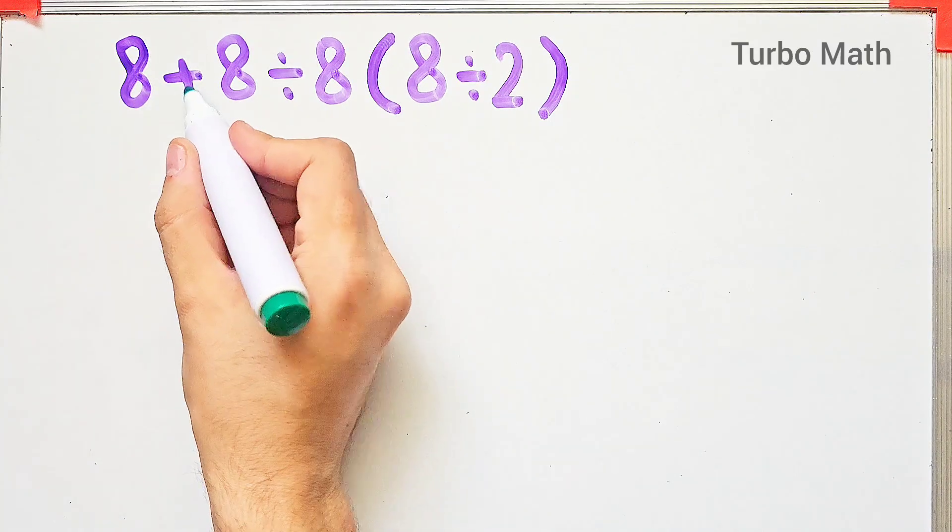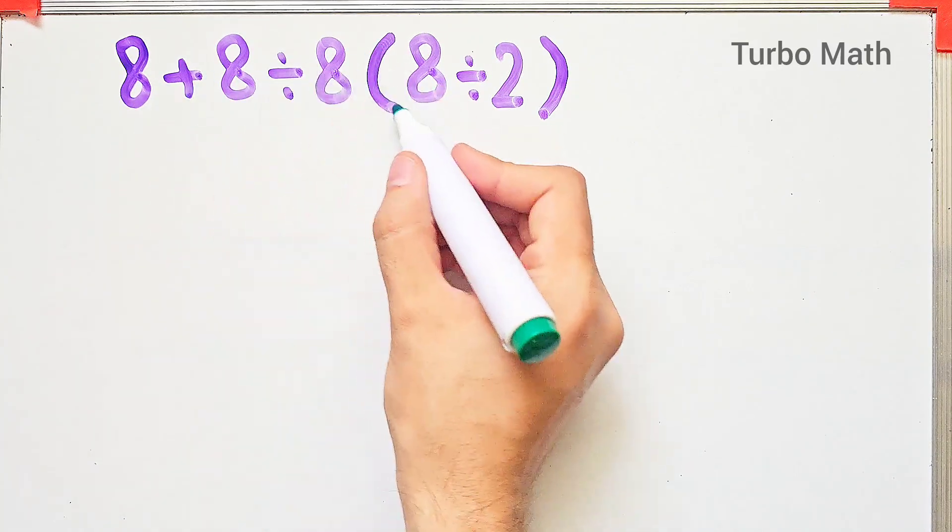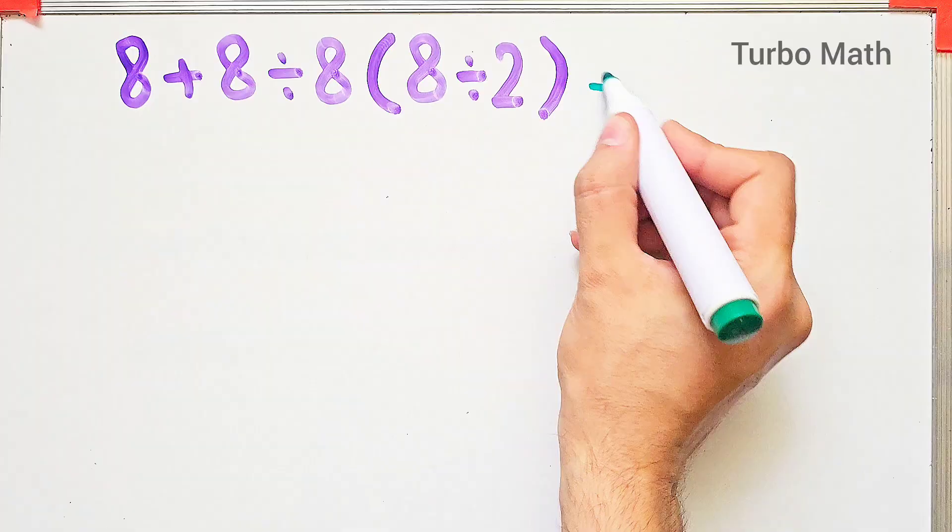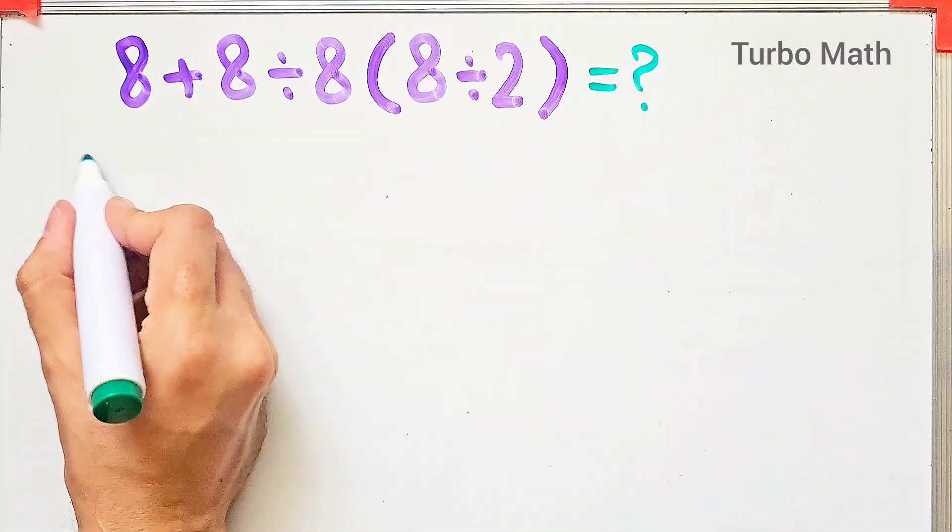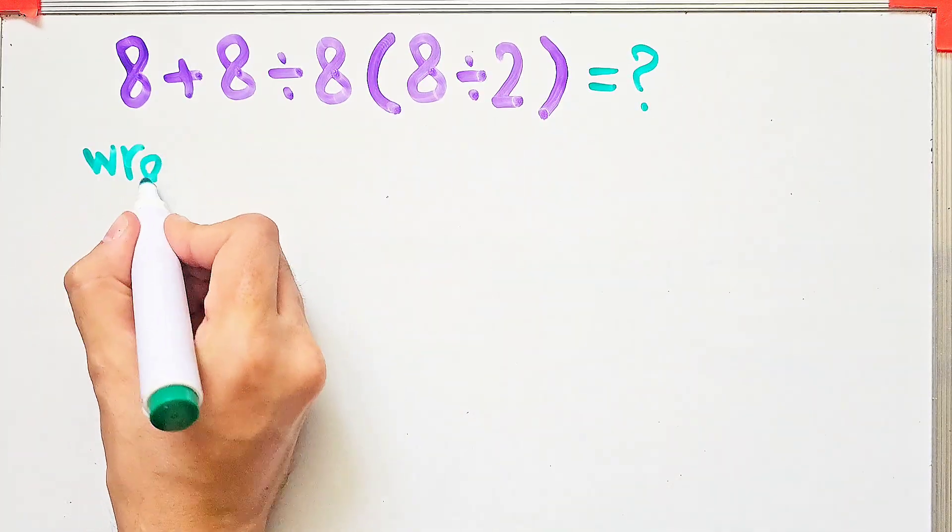8 plus 8, then divided by 8, then times 8 divided by 2. What is the answer of this question? Hi friends and welcome to TurboMath channel.